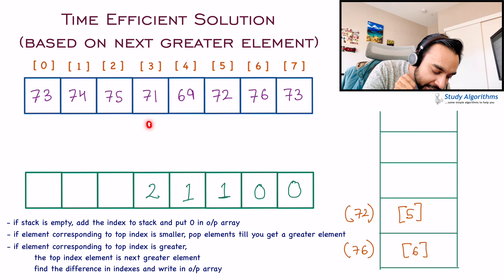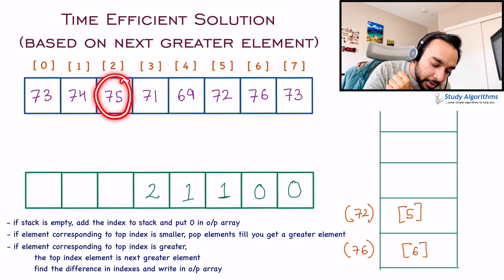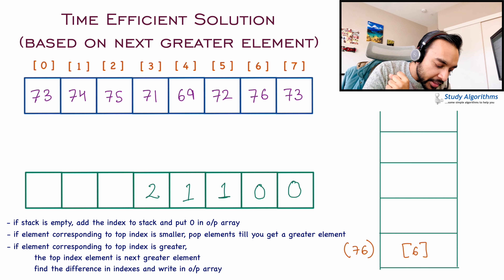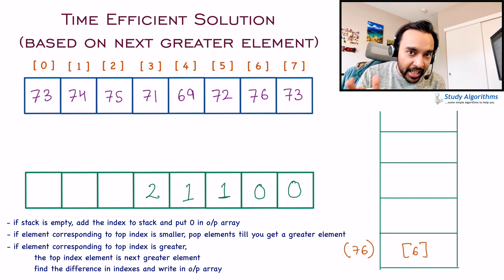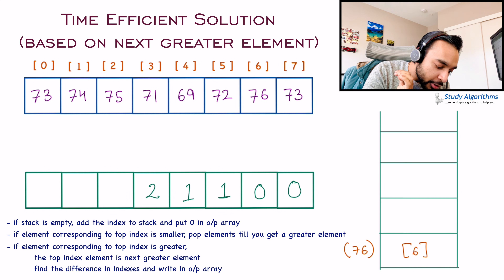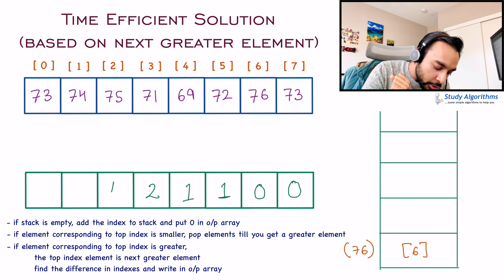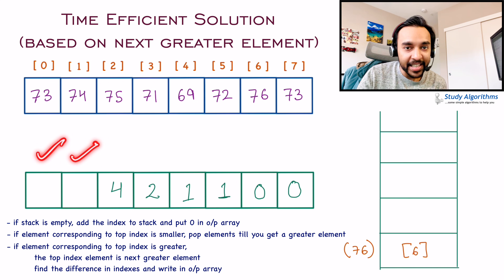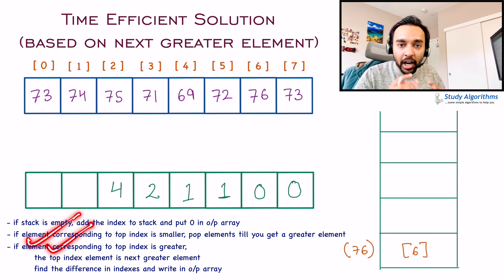Similarly, for 75, you compare it — since 72 is smaller, you pop out of the stack. Then you compare 75 to the top of the stack again: 76 is larger, so this is the next greater element. To find the distance, you subtract index 2 from index 6, and that gives you 4 in your answer. Similarly, you can add the remaining values as an exercise. Once you have traversed the entire array, you will ultimately get your output.